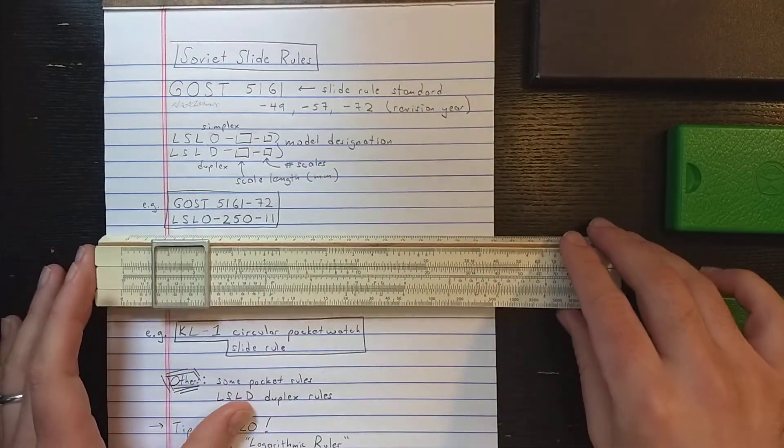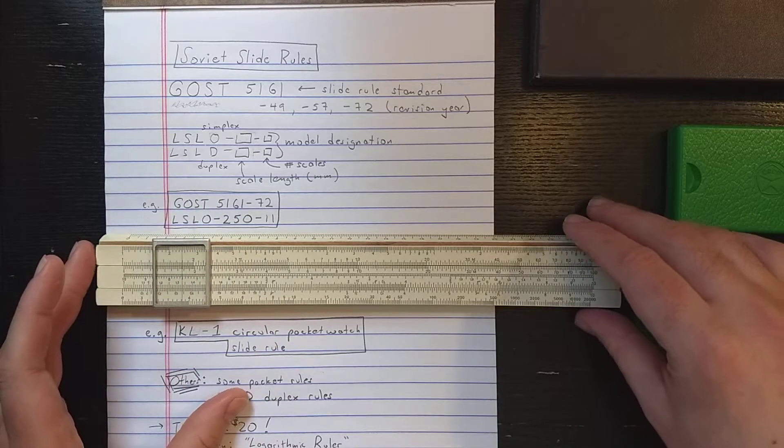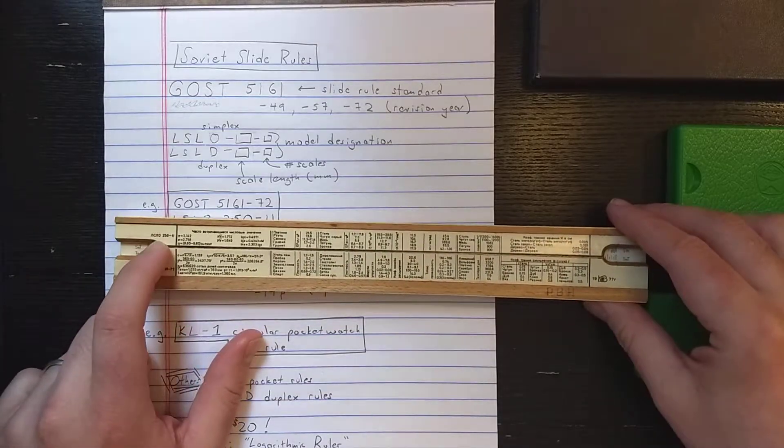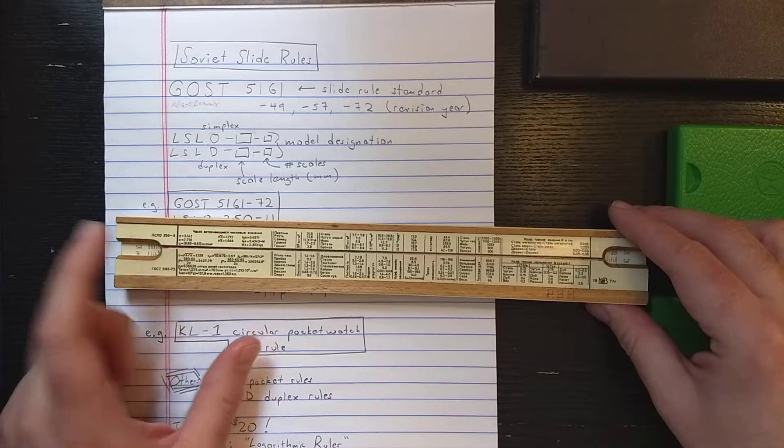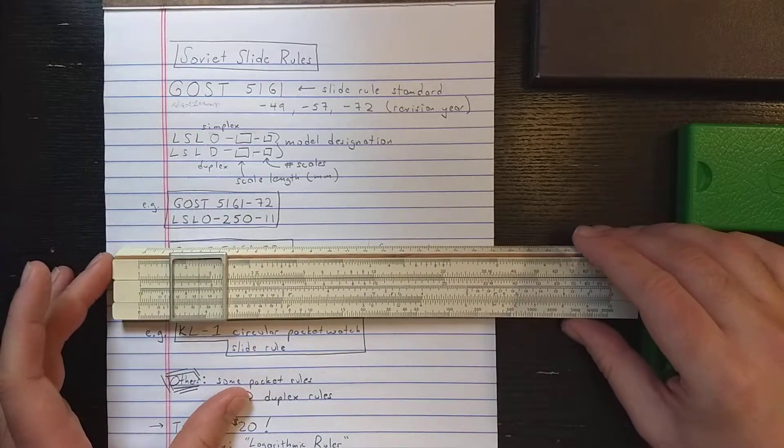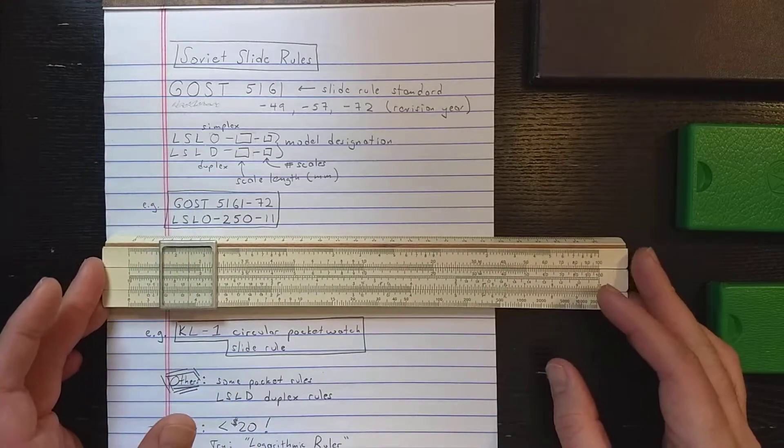This example is an LSLO 250-11 model. You can see that here. So the first part, the LSLO, means it's a closed body rule. Some of the rules say D for duplex. I don't have any duplex rules.